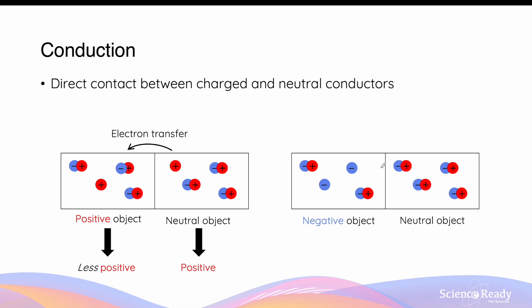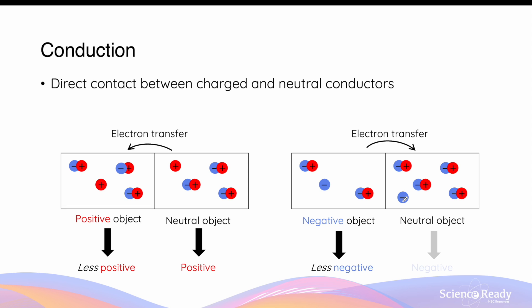When a negative object is in contact with a neutral object, the opposite transfer pattern occurs. The negative object donates some of its electrons to the neutral object, causing itself to become less negative. The neutral object, by gaining an excess of electrons, becomes negatively charged. So through conduction, both objects are now negatively charged.